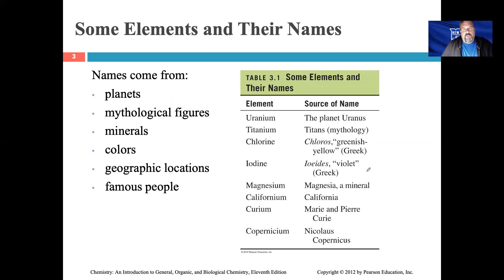Element names come from many different sources: planets, mythological figures, minerals, colors, geographic locations, and famous people. You don't need to memorize every single element — even the instructor admits to not knowing all of them. Some elements you'll learn automatically because you see them over and over, and those are the ones you'll commit to memory coming out of this course.